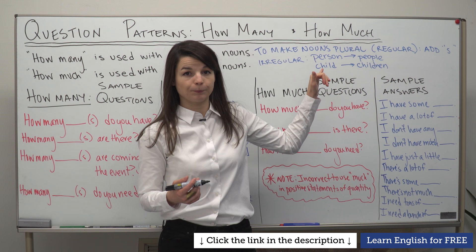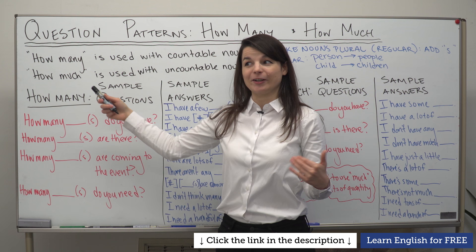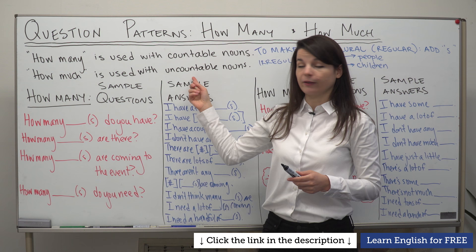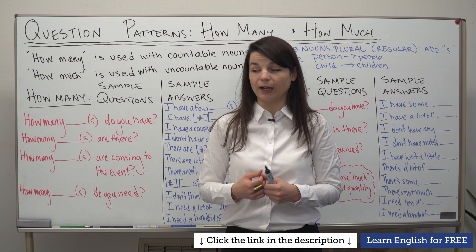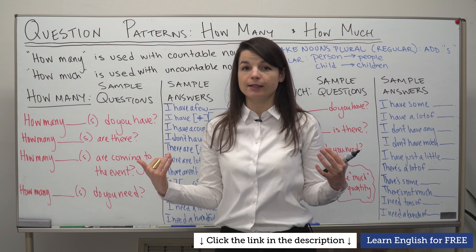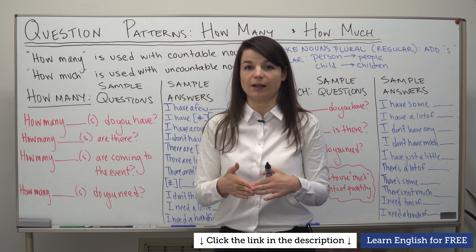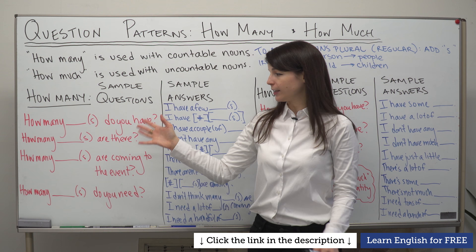'How much' is used with uncountable nouns — nouns we cannot count. You might also know the expression 'mass nouns'. Some common examples of uncountable nouns are air, beer, wine, money, time. We can't count these directly; however, we can count the individual units inside these nouns. With that in mind, let's begin by looking at 'how many' questions with countable nouns.